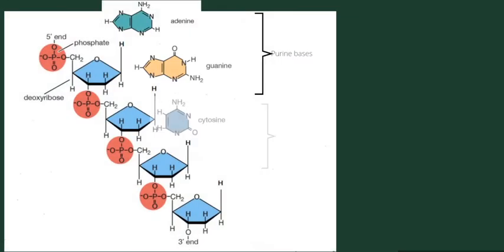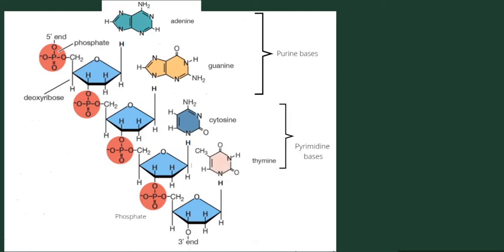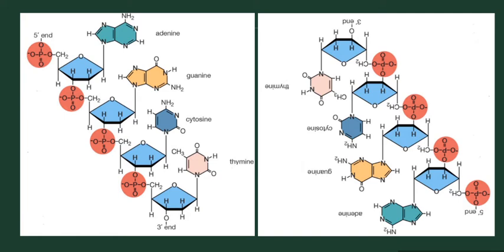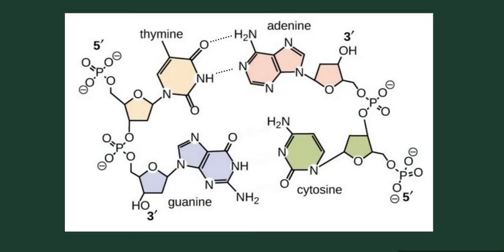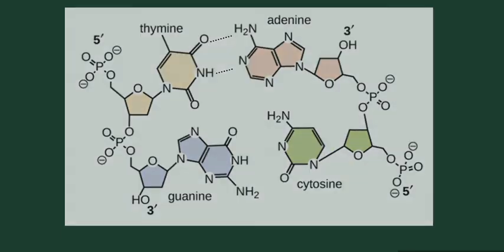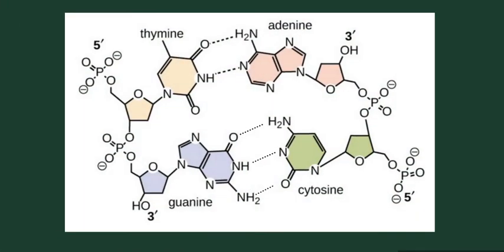Now for forming the double strand DNA, two single strand DNAs come near to each other and align in an opposite direction, as you can see here. The bases between them form hydrogen bonds. The possible hydrogen bonds are formed between adenine and thymine, which form two hydrogen bonds, and guanine and cytosine form three hydrogen bonds.